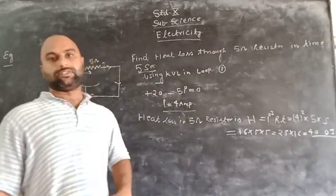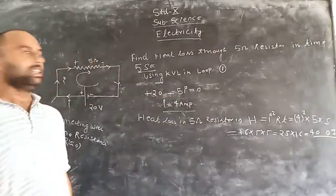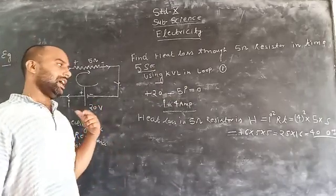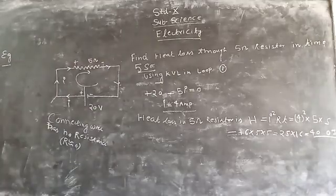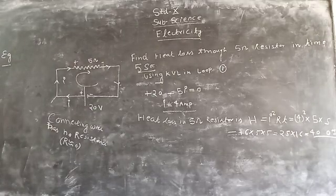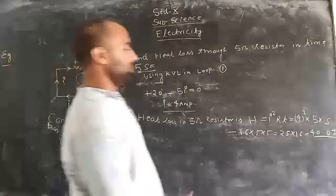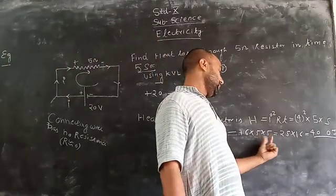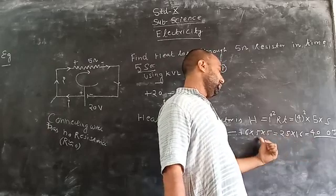We are using the formula for heat loss in the circuit. We have to use the simple I²Rt formula. This is the basic concept that we are using here. This is 4 times 5 times 5, which equals 4 times 25.